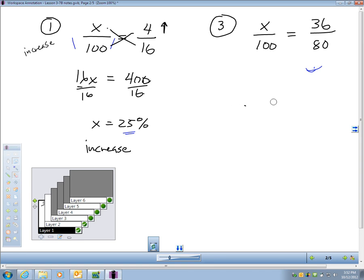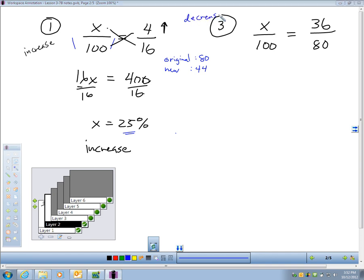Let's go to number 3. Question number 3 says we start with 80 and the new amount is 44. So let's do that again. Original amount, 80, and my new amount, 44. So the first thing we can tell in number 3, we are definitely having a decrease. We started at 80, finished at 44.